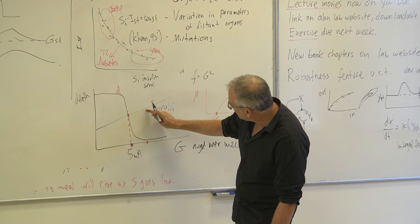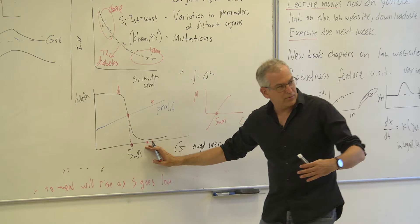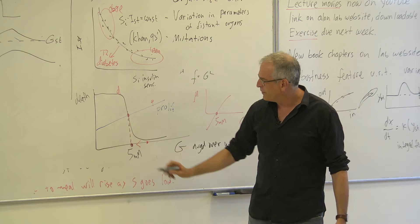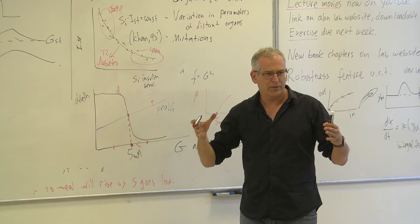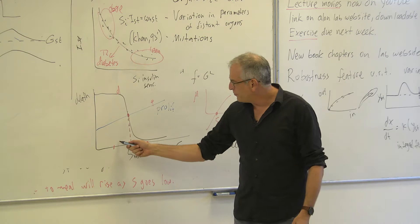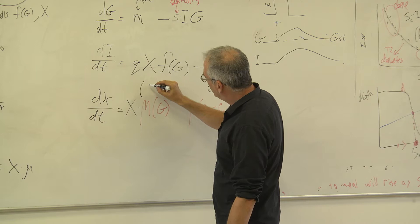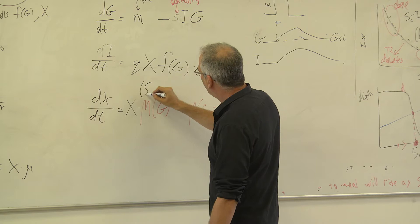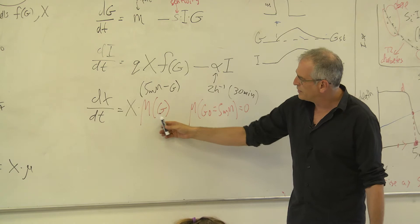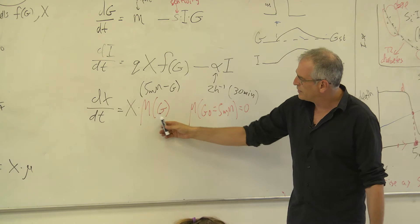If there's too much glucose: more proliferation than death → more beta cells → more insulin → less glucose → you flow back. Too little glucose: more death → fewer beta cells → less insulin → more glucose → you flow back. It's a stable fixed point at 5 millimolar. The equation is almost like writing mu ~ (5 mM - G), so the only way this equation reaches steady state is if G equals G₀ equals 5 millimolar - averaged over weeks.